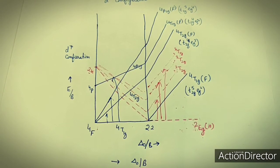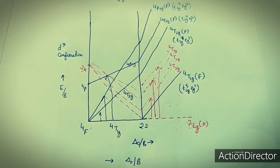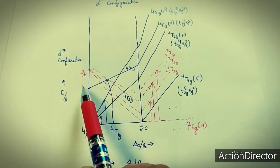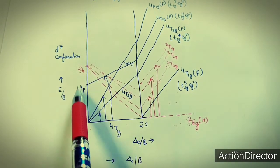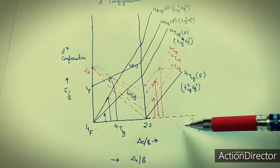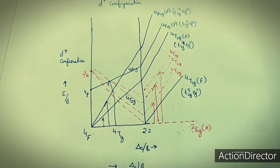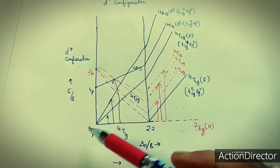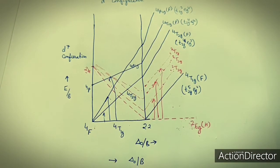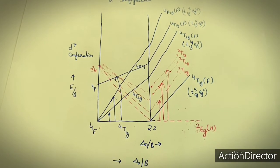This simple Tanabe-Sugano diagram has been drawn for clarity, removing the additional terms. However, one must mention that there should be other terms of doublet multiplicity, and those terms generate their respective Mulliken terms. Transitions occur from that multiplicity to the same multiplicity terms in strong field complexes. In weak field complexes there are three transitions giving three peaks, while strong field complexes may show many peaks.